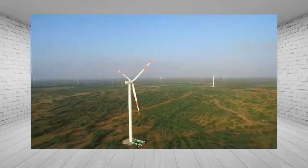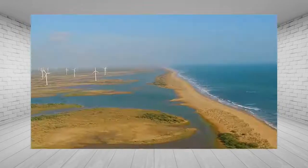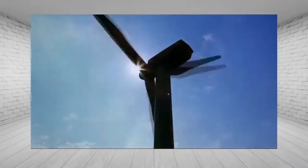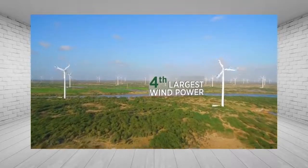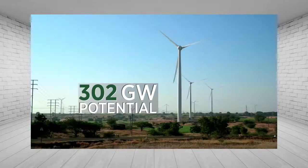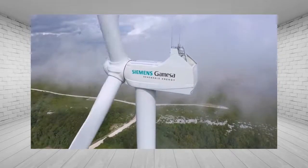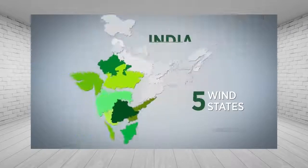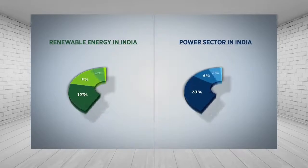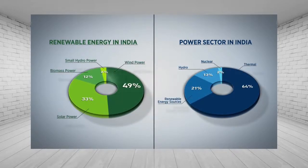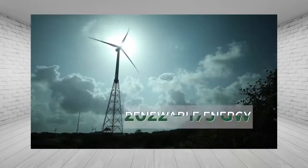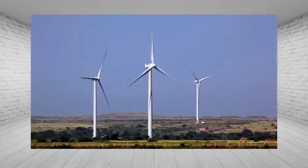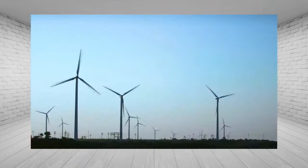In India, wind power projects grew steadily after grid-connected turbines came in 1989. India is the 4th largest wind power nation in the world with 34 GW installed capacity and a potential of 302 GW. With major investments driven by the private sector, a 60% capacity increase occurred in just the last four years. Wind already leads with the largest share — 49% — of India's renewable energy mix. By 2022, the government aims for 175 GW of renewables, with 60 GW going to wind.